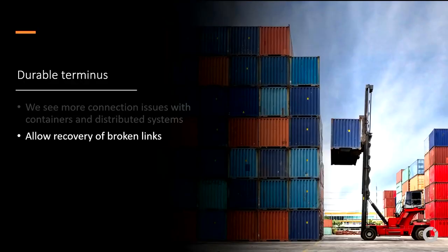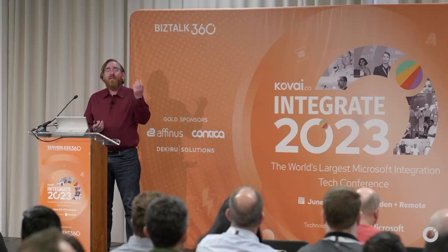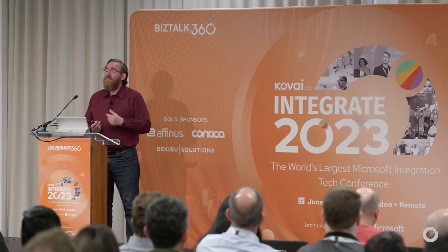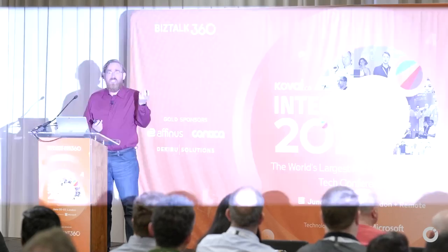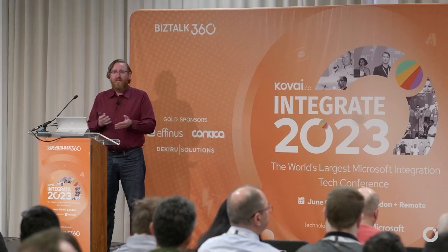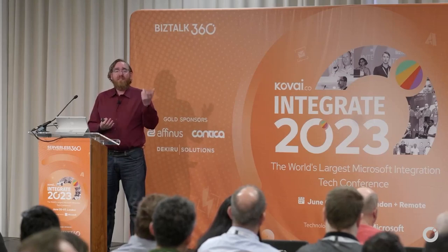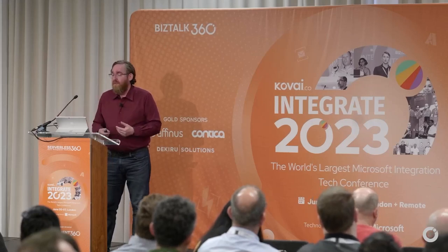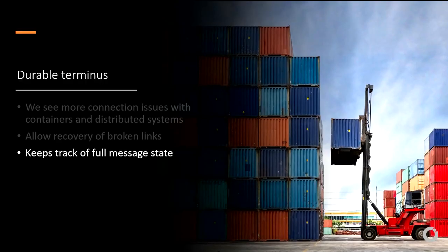With Durable Terminus, we're introducing new lock modes — currently called 'durable lock.' Instead of peek-lock or receive-and-delete, you take a durable lock and can reconnect with your client using the same endpoint ID. We'll then restore your message state — your session locks, message locks, etc. If you come back within a specified time window (currently set to 10 minutes), you can continue working on your messages without any duplicate processing. This keeps track of your full mesh state, ensuring you always process messages exactly once.